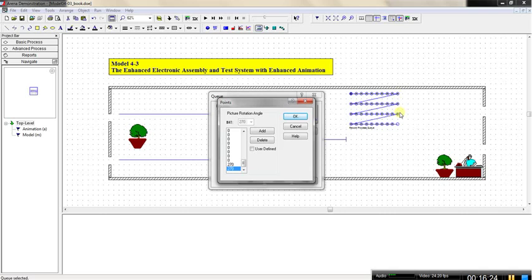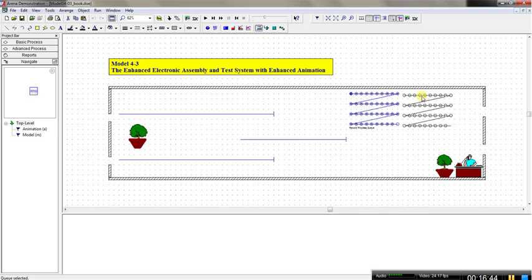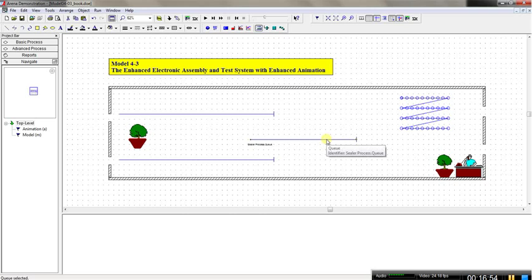This is our queue for the rework process. I can check the number of points — this is just the final one — and move it to a better location. I could also move the Sealer process queue. This just illustrates what we can do to enhance the queue animation. Now please do this on your own: pull all four queues away from your logic in model 4.2 to enhance animation. Extend the Prep A and Prep B queue lengths as I showed, and make the rework process queue a point-type queue.